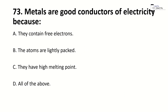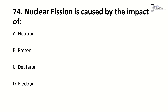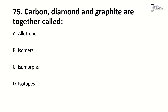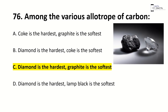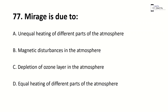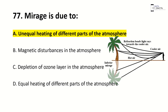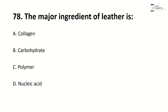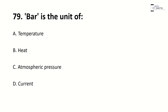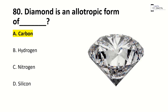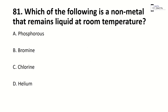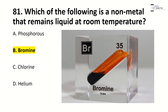Metals are good conductors of electricity because they contain free electrons. Nuclear fission is caused by the impact of a neutron. Carbon, diamond, and graphite are together called allotropes; among these, diamond is the hardest and graphite is the softest. Mirage is due to unequal heating of different parts of the earth. The major ingredient of leather is collagen. Bar is a unit of atmospheric pressure. Bromine is a non-metal that remains liquid at room temperature.